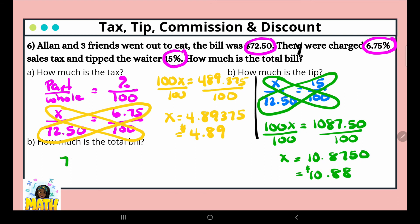Now let's calculate the total bill. So we're starting with $72.50 plus $4.89 in tax, plus $10.88 in tip, equals $88.27. So the total bill after tax and tip is $88.27. Thank you for watching and have a great day.